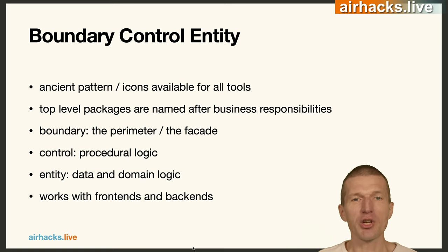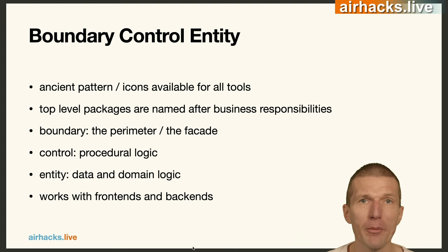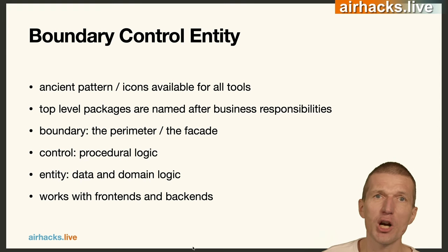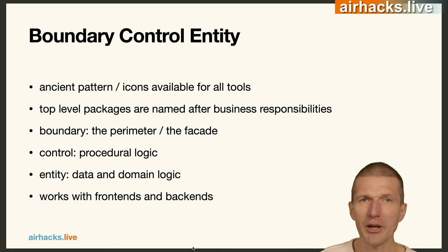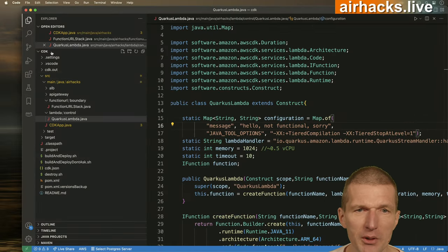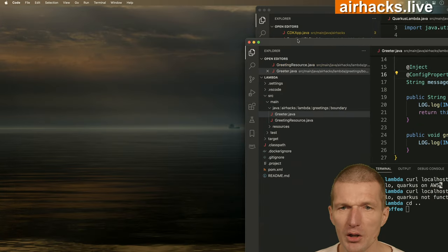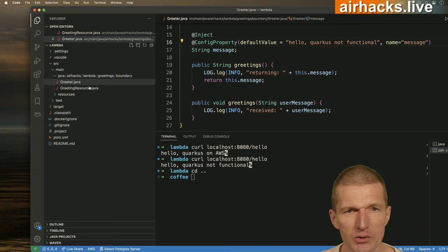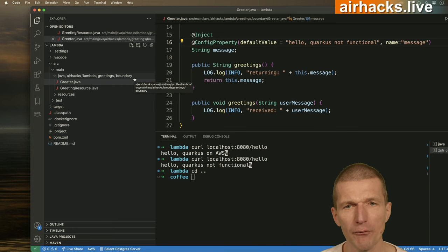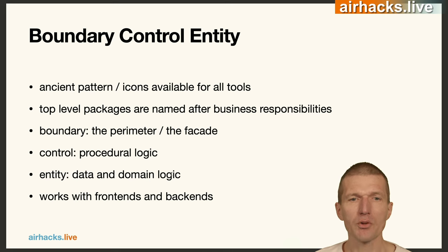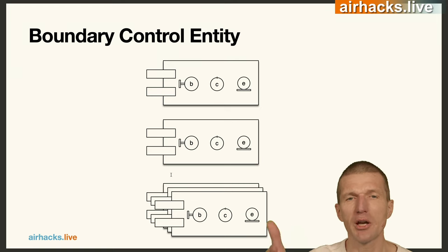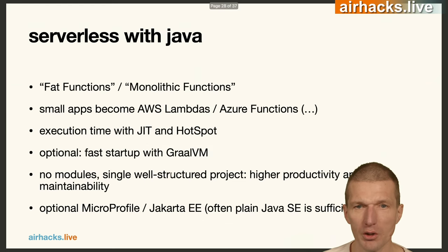Internal structure: our Lambdas are huge — in some projects several hundred classes, no problem at all. Java doesn't care whether there's one file or 500. Even with 500 classes, the resulting JAR is still tiny. We use boundary-control-entity structure — the same as always. We have functional packages. Looking at the source code: there's the CDK cloud development kit for provisioning, and the business logic part. The Lambda has 'greetings' as the business component, 'boundary' as the entry point and control, few reusable business logic pieces, and entity for data.